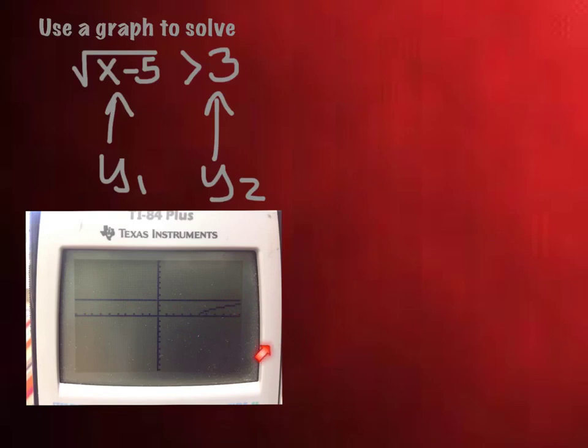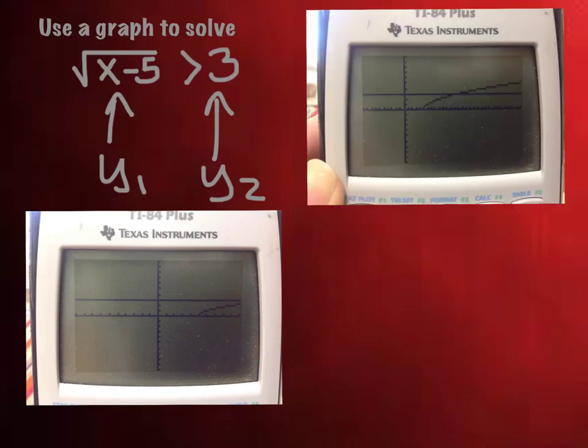And then when you do that, it would look like this. I extended mine out to x is 30, but I think 20 would probably be sufficient, because you can see that the intersection happens right here.